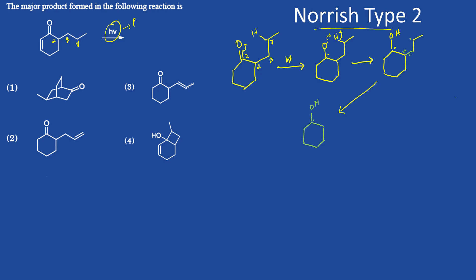Form a radical over here plus two radicals over here, and these two radicals form a double bond like this. This double bond like this, and this will form.